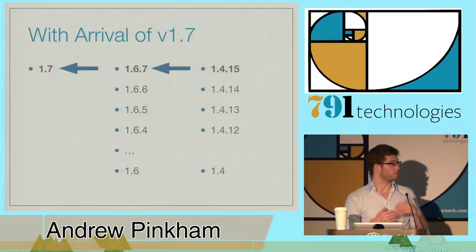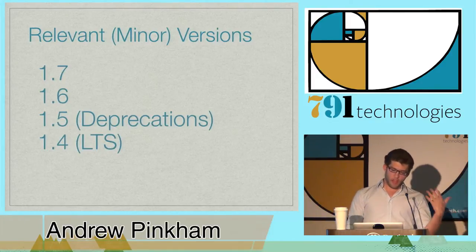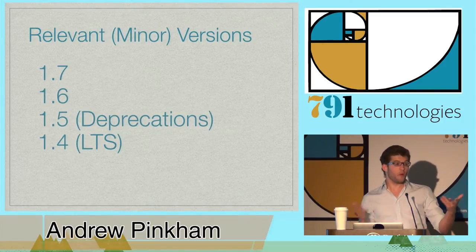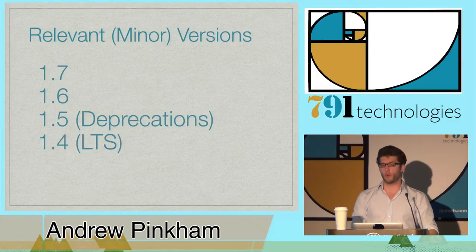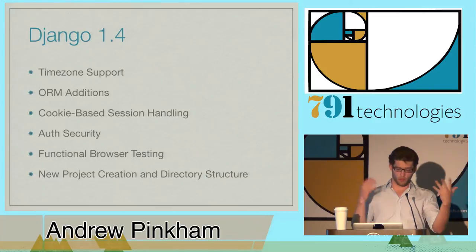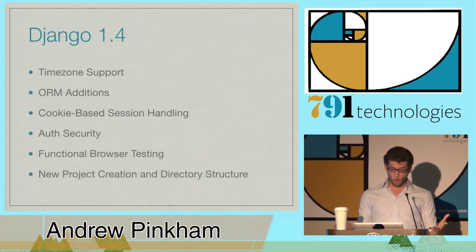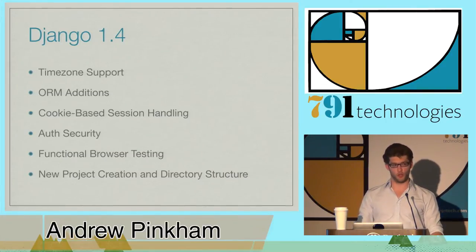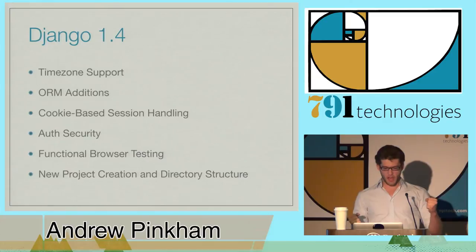Now that we understand the version numbers, we can talk about the previous Django versions to help inform us about 1.7 and the upgrade process. We're going to look at 1.7 and 1.6 since they're currently supported, but 1.5 is going to affect the deprecation process in 1.7, and 1.4 is actually supported because of LTS. Django 1.4 brought time zone support, several additions to the ORM such as prefetch_related, cookie-based session handling, and auth security — passwords prior to this were stored in SHA-1, and this is when we saw PBKDF2 and bcrypt come in. That was huge for security. 1.4 also brought functional browser testing and a new folder structure, making it arguably the beginning of modern Django.